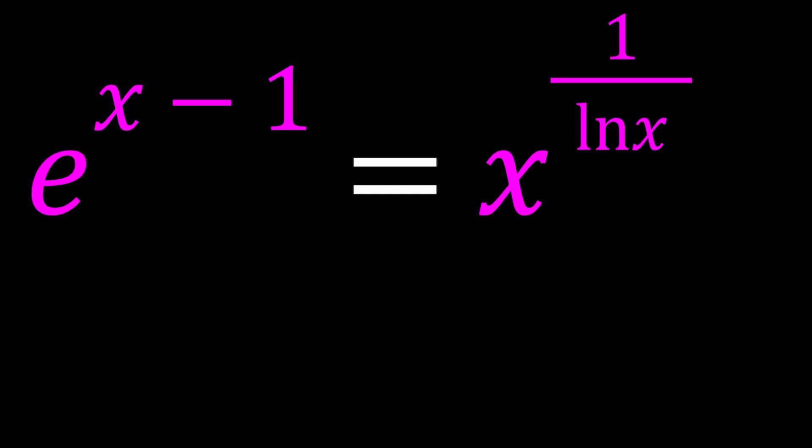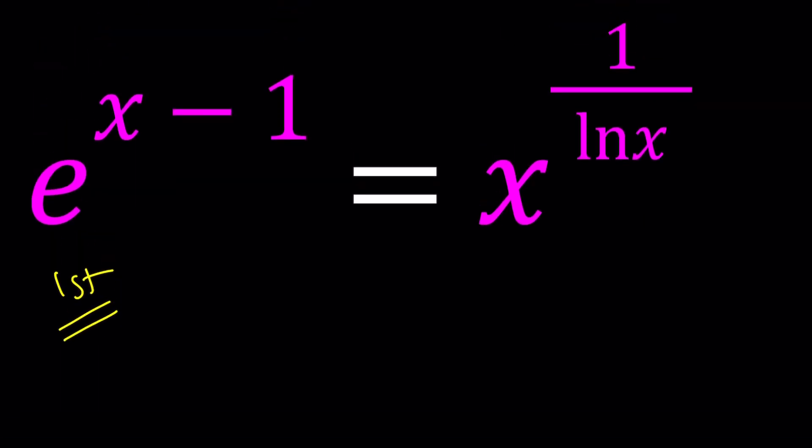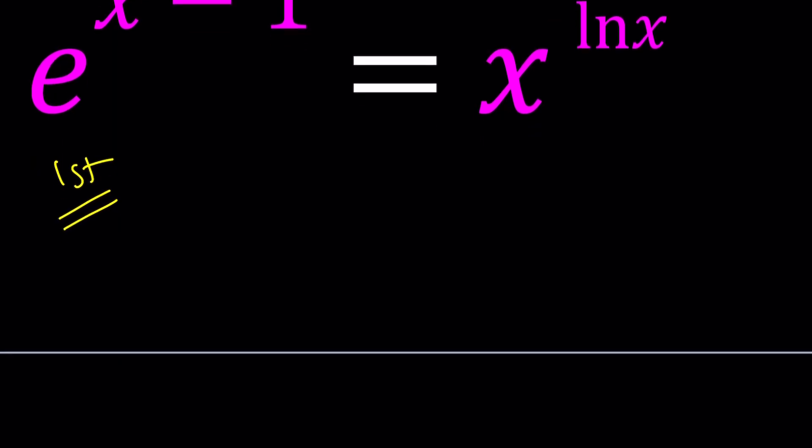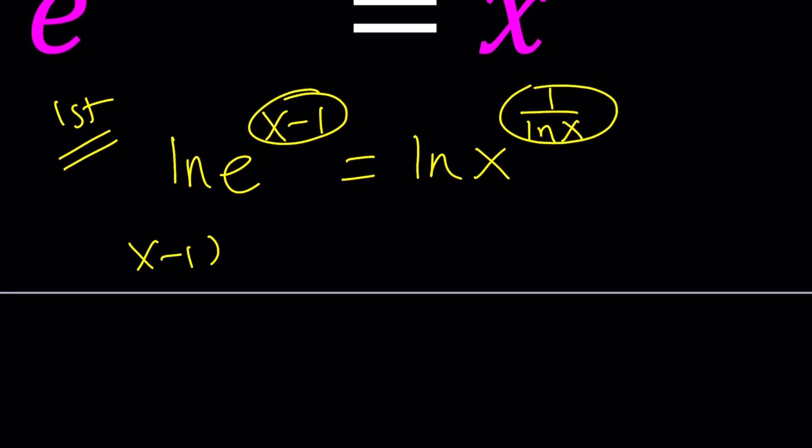First of all, you can just maybe natural log both sides. That would probably be reasonable, right? Let's do that. So, as my first approach, I'm going to ln both sides. And ln is a good choice here, I think, because of the e and the 1 over ln x in the exponent. So, if you ln e to the power x minus 1 and ln x to the power 1 over ln x, then from here, by moving the powers to the front, you'll get x minus 1 ln e equals 1 over ln x times ln x. Now, the right-hand side is actually pretty interesting, which is going to end up being an identity.